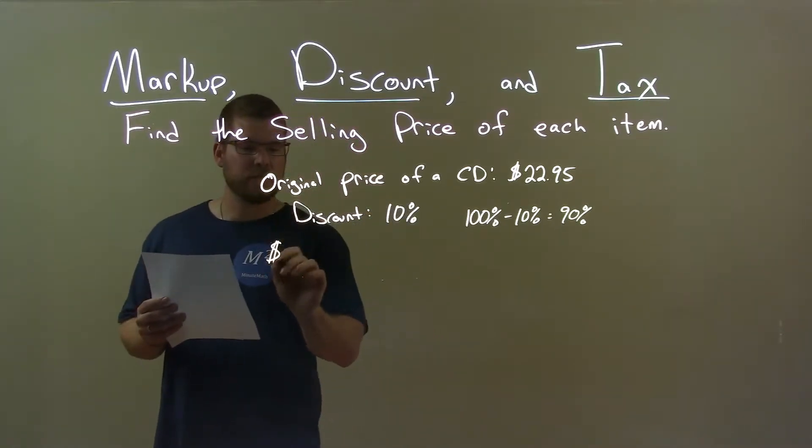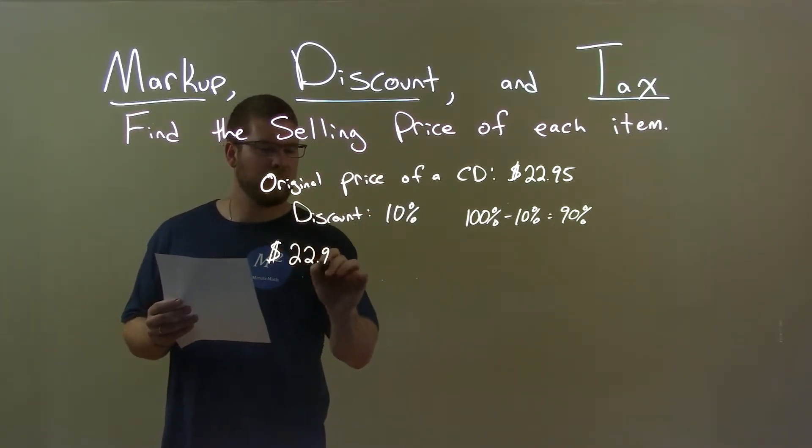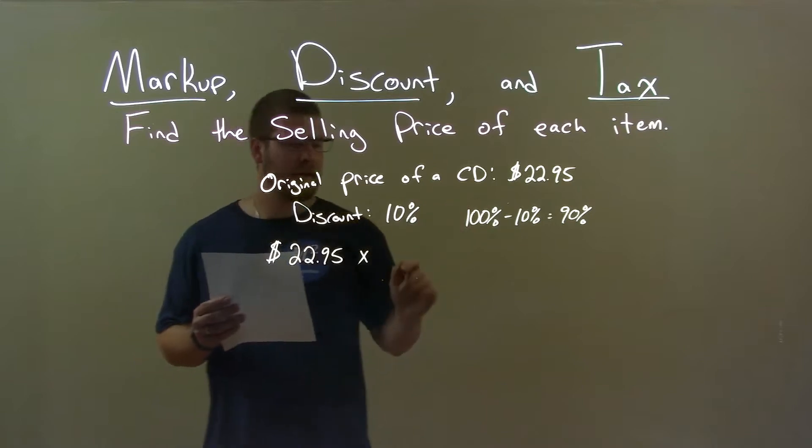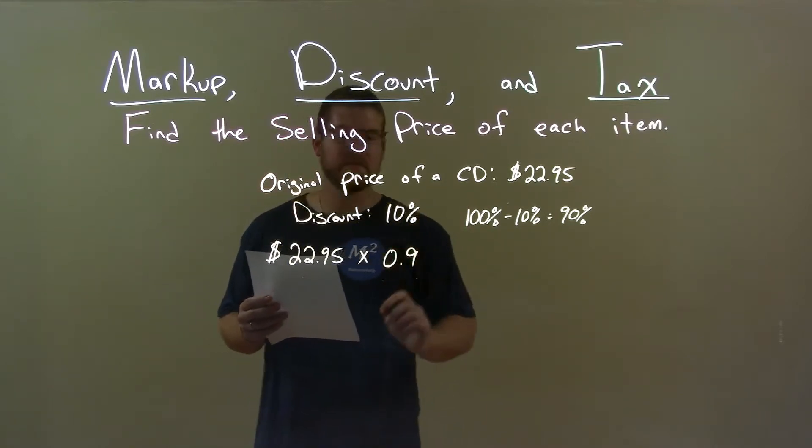We take that original purchase price, $22.95, and multiply that by our 90% as a decimal, which is 0.9.